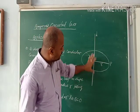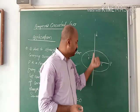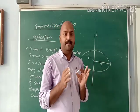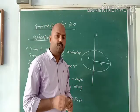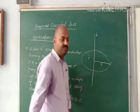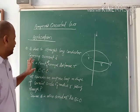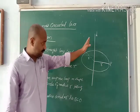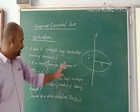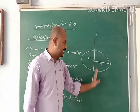Here you can see this is a long straight wire carrying current I. What is the magnetic field due to this current-carrying conductor at point P? We take a point P at a normal distance R from the current-carrying conductor. This is a straight long conductor carrying current I, and P is the point at normal distance R from it.